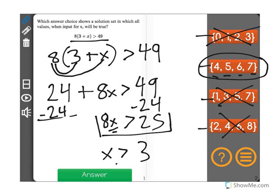Therefore, 4, 5, 6, 7, if we were to input all of those numbers for x, it would keep our inequality true.